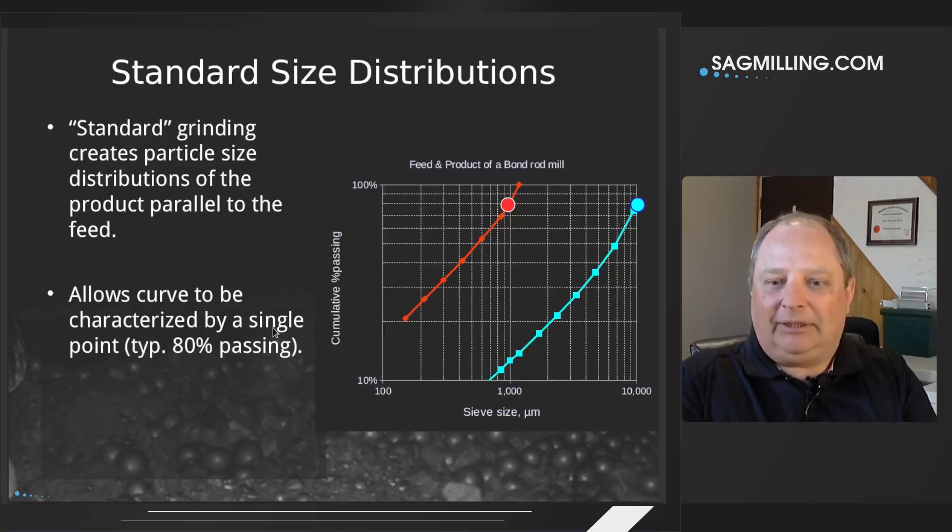We are normally going to plot these things on cumulative percent passing charts. There will be another video that deals specifically with these kinds of charts. The key thing you need to know is that the coarsest particle in the sample is going to be up here at this hundred percent passing point. And then as you go down this line, more and more of the particles are going to be retained on the screen sizes. The screen sizes are shown on the x-axis as you move down these lines.